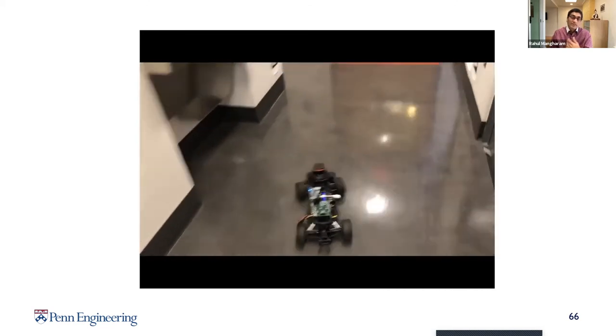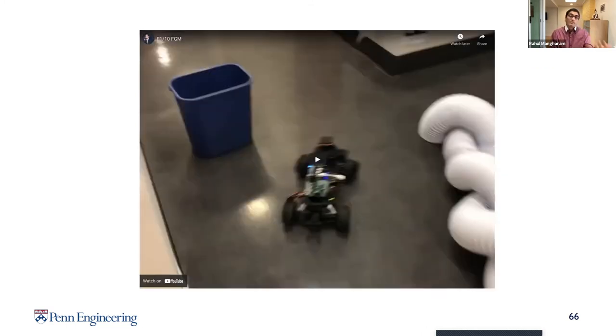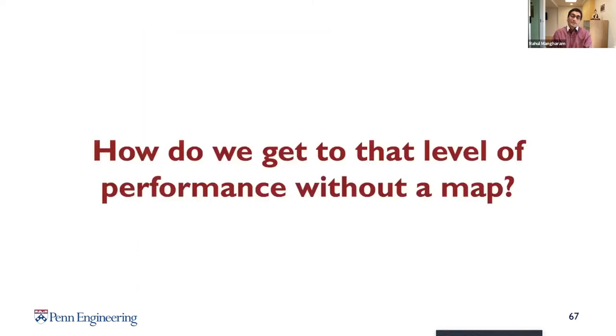And this is an example that I showed before. You can just see this vehicle is navigating all these obstacles. And people can jump in front of it, dynamic obstacles, there's no problem with that. It does not know whether obstacles are a priori. It is just a reactive algorithm. And so, we want to figure out how do we get that level of performance without a map.